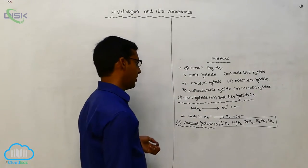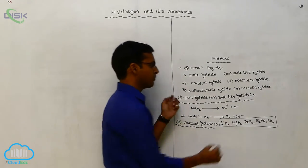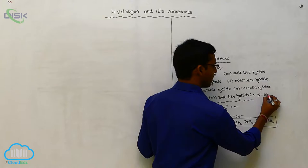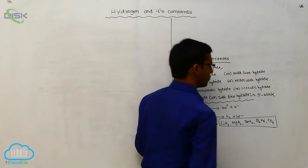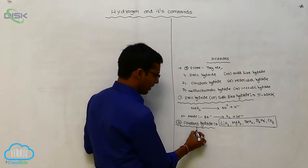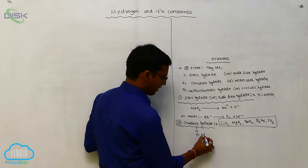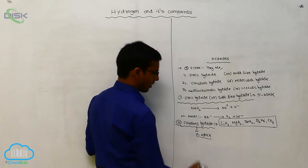Ionic and covalent hydrides. Ionic hydrides are prepared from S-block elements because these are electropositive metals. Covalent hydrides are prepared from P-block elements.